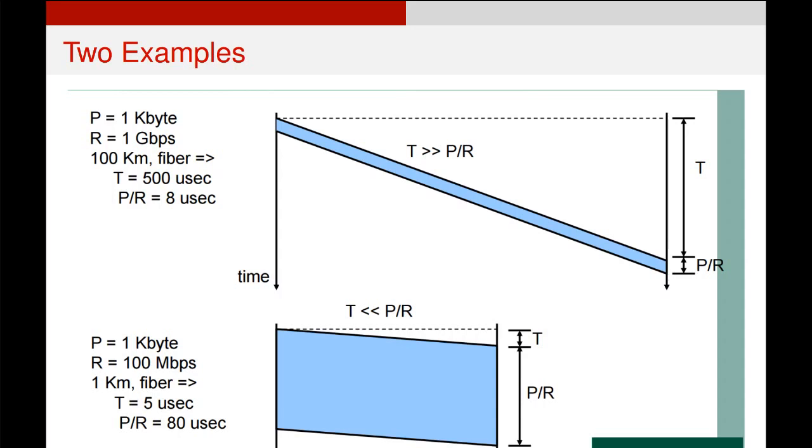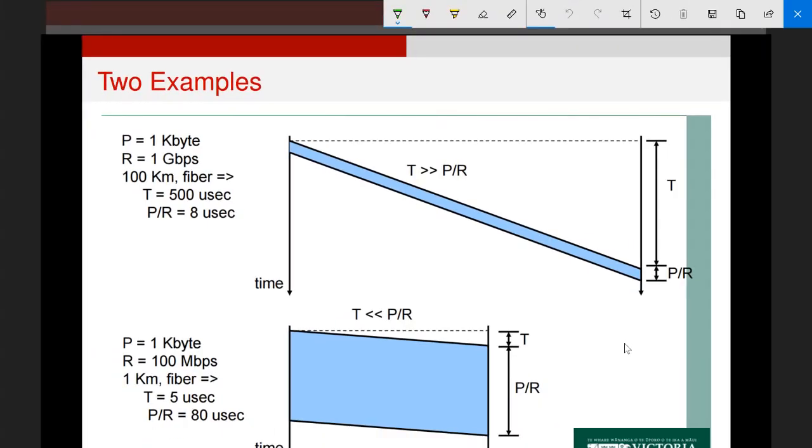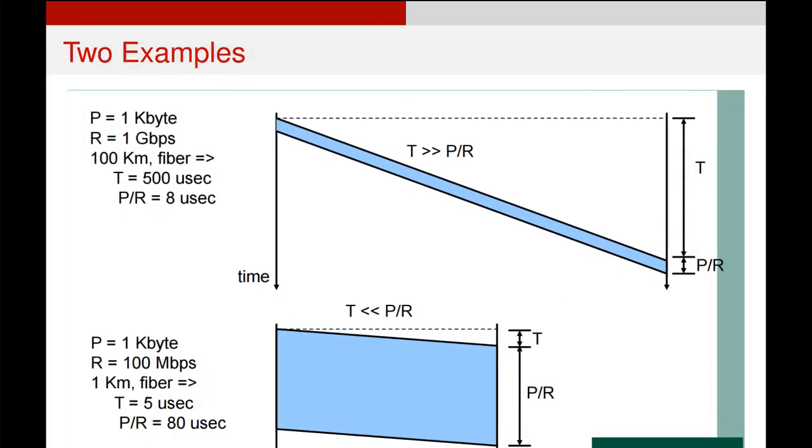If we contrast that with the example down the bottom, we can see that we have the same size packet, but now our bandwidth is much reduced and our connection is much shorter. That means the amount of time limiting this transfer is actually just getting the information on the network. Once it's on the network, it's transmitted very quickly because the connection is not so long. So different kinds of connections can be characterized using these different measurements.